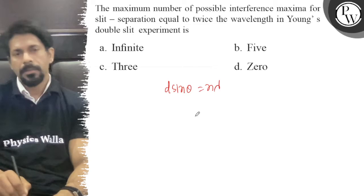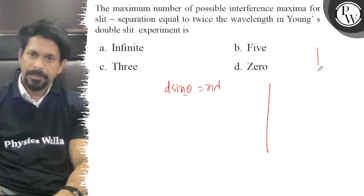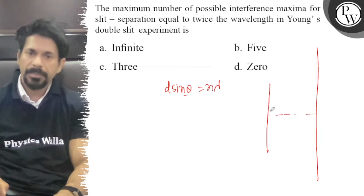Theta is the angular position of the nth maxima. Let this be your screen, this is the central maxima, let's say this is the nth maxima.